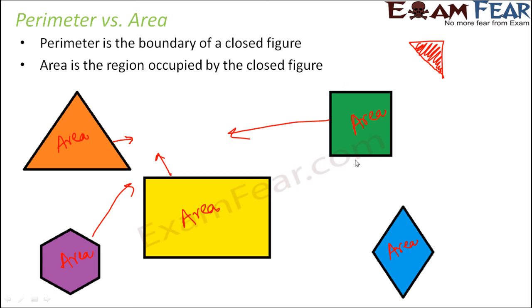The entire black boundary — the sum of all the sides of each figure — is the perimeter. The black lines denote the perimeter. That is the difference between perimeter and area.